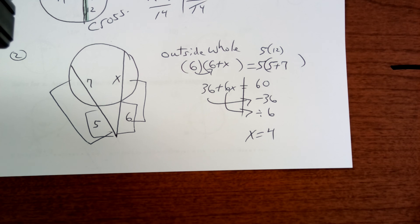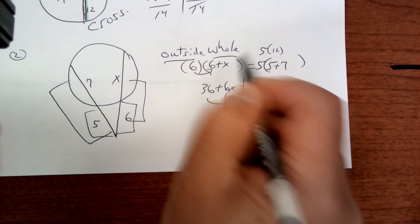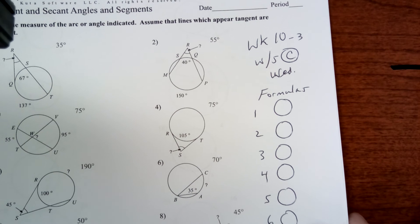So say it to yourself. Outside times the whole thing. All right. So those are 6 of them. And there's one more that I need to teach you, but I'm not going to show you on today's lesson. It might be on the worksheet, just so you know.